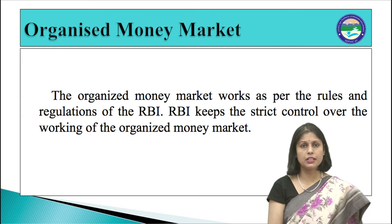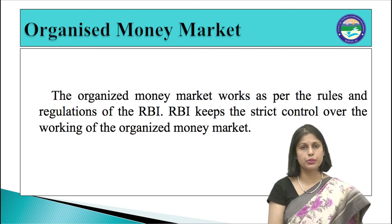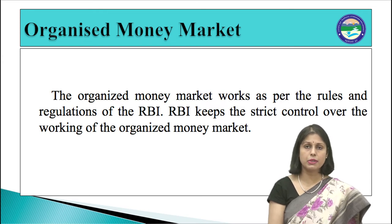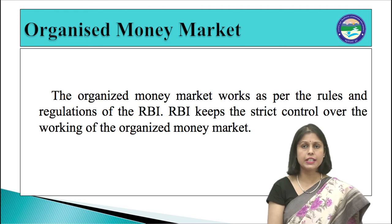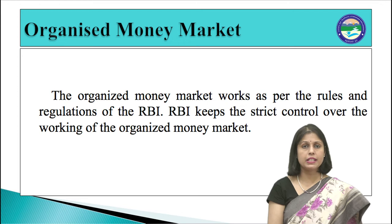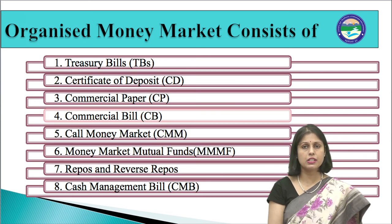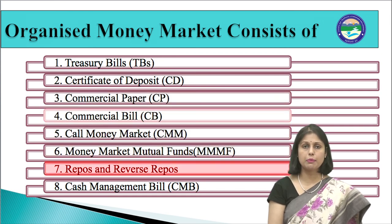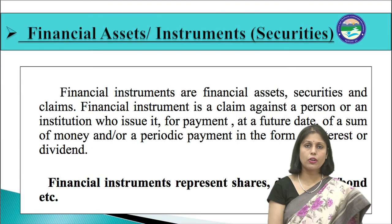The organized money market in India is just close to three decades old. The Chakravati Committee formed in 1985 first underlined the need for an organized money market, and the Vogel Committee formed in 1987 laid the blueprint for its development. Money market is regulated by the RBI in India, which keeps strict control over the working of the organized money market. Eight instruments are designed for use by different categories of business and industrial firms: treasury bills, certificates of deposit, commercial paper, commercial bill, call money market, money market mutual funds, repos and reverse repos, and cash management bills. Trading in the money market is conducted over the telephone followed by written confirmation from both borrowers and lenders.